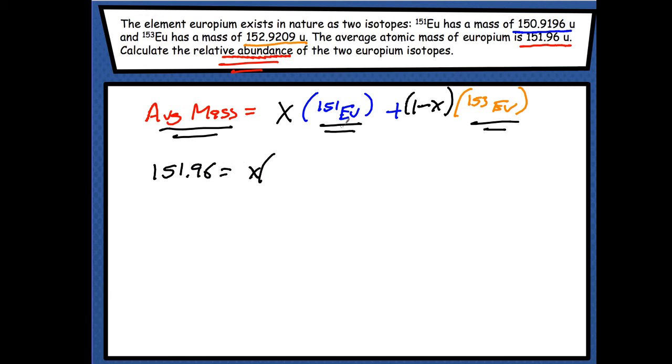And the mass of EU-151 is 150.9196 plus 1 minus x times the mass of the other one, which is going to be 152.9209. Alright, so now it just becomes an algebra problem.